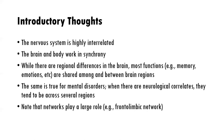Some introductory thoughts: the nervous system is highly interrelated, meaning the brain and body work in synchrony with each other. Messages are sent from the brain to the body and vice versa. While there are regional differences in the brain — for example, the amygdala we associate with emotion processing and fear — most functions like memory and emotions are shared among and between brain regions. We shouldn't think that just one structure of the brain exists outside of the other structures; it all works in concert.